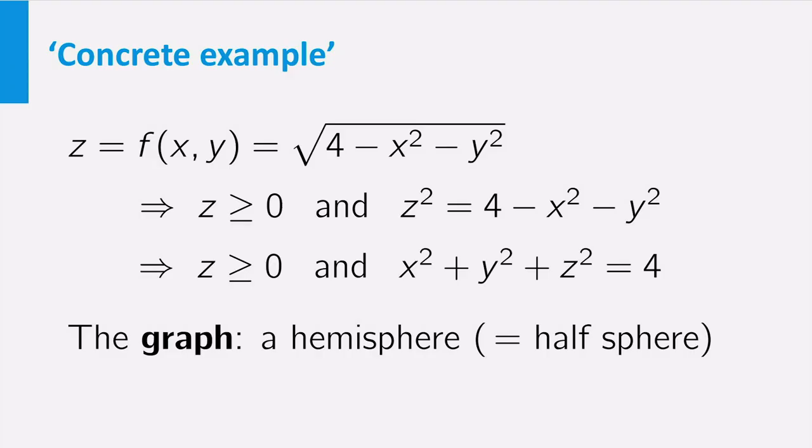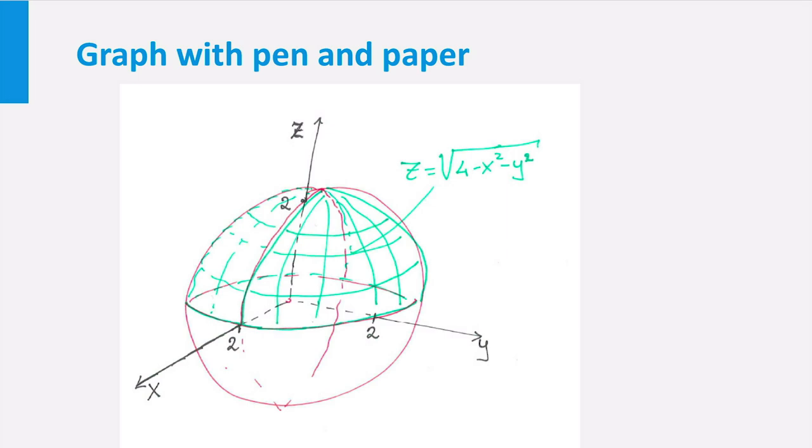Once we know this, we can sort of sketch the graph. I tried it by hand, and my second attempt led to this result. The graph is the green part. You may judge I am not a very gifted artist, and I agree with that. I told you about Dennis. It is him who produced this smooth picture of the graph.